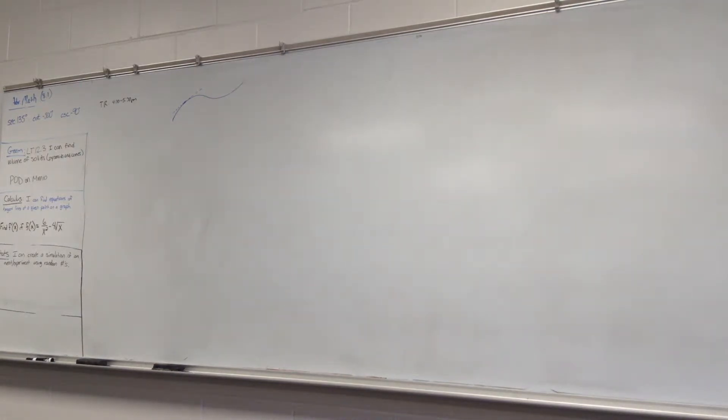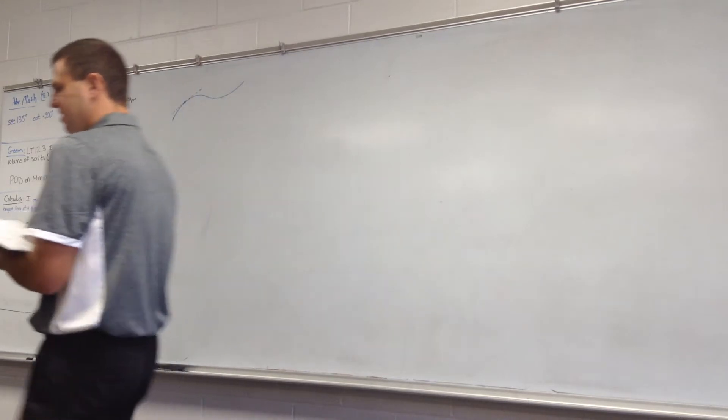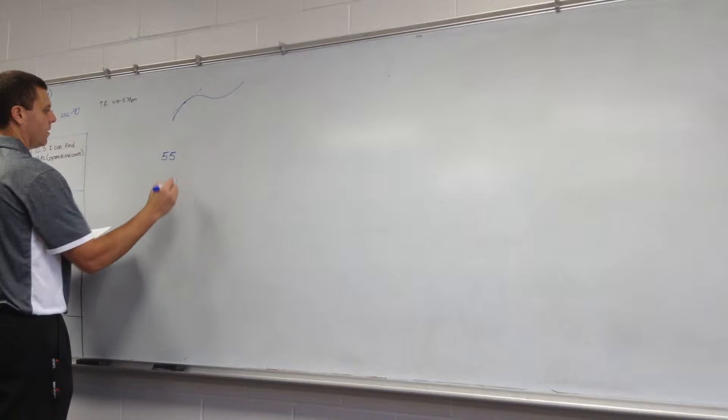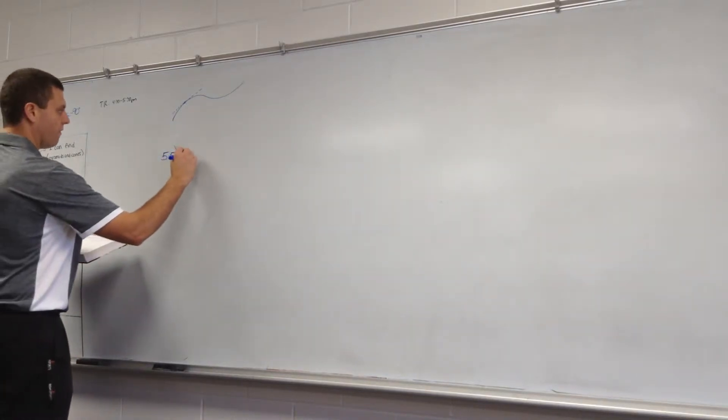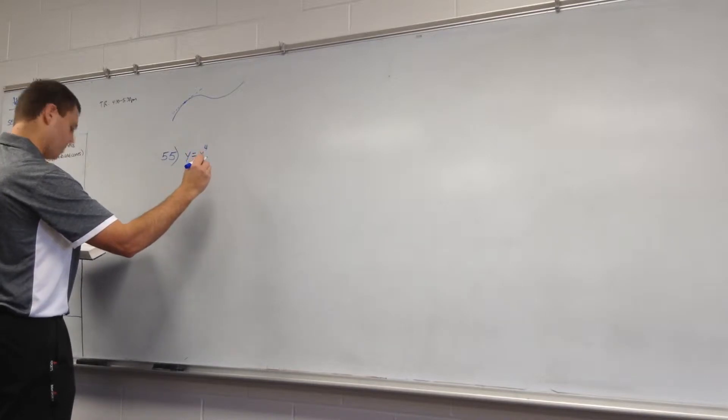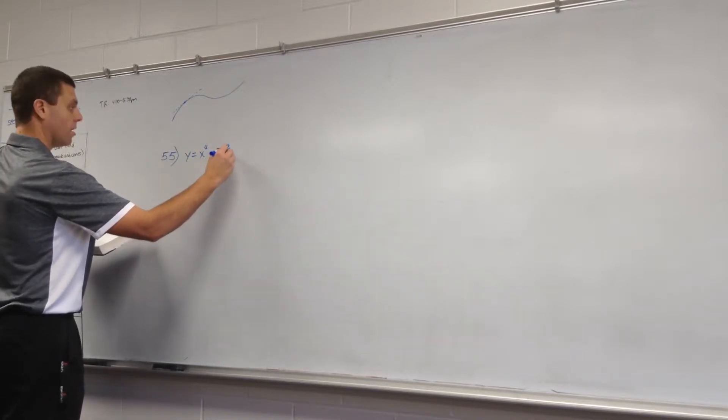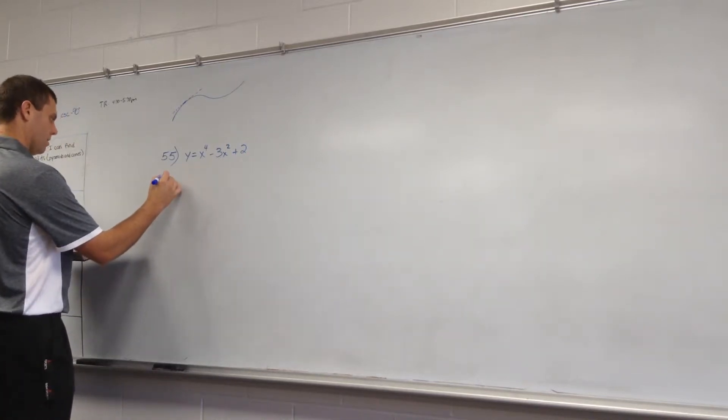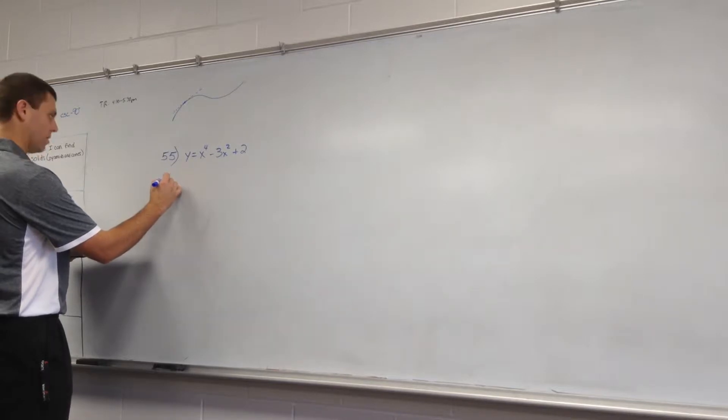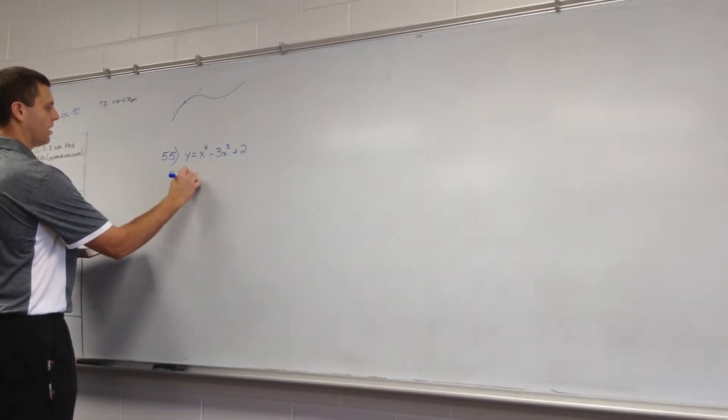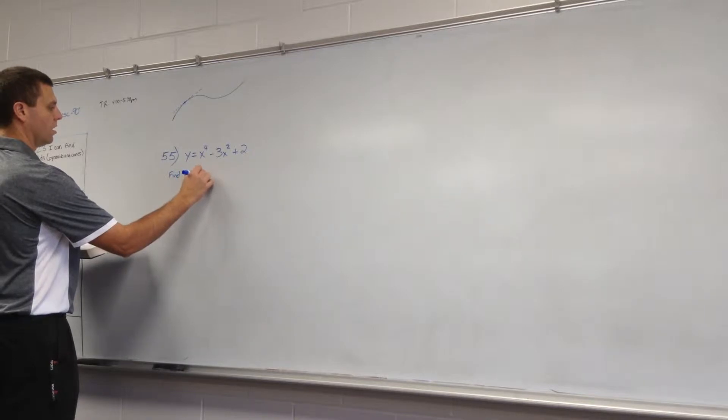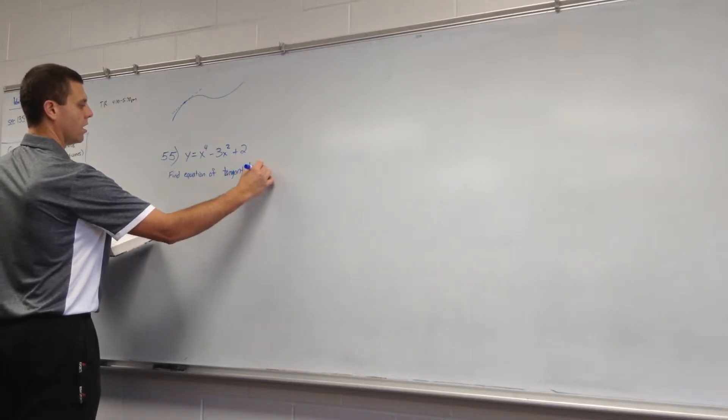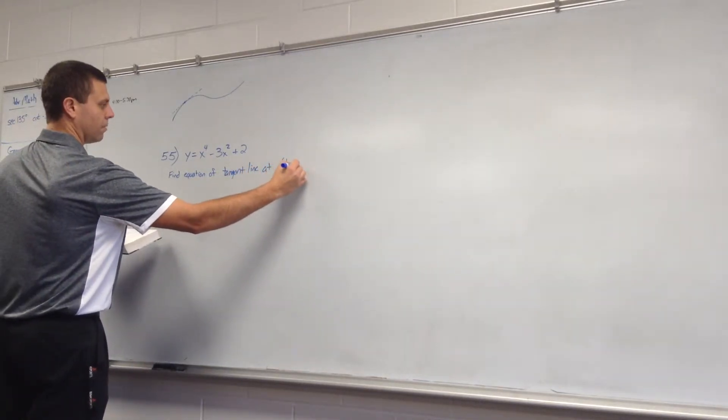I'm going to do one of your homework problems for you. It's number 55 on page 115. So we have y equals x to the fourth minus 3x squared plus 2. And we want to find the equation of the tangent line at the point 1 comma 0.